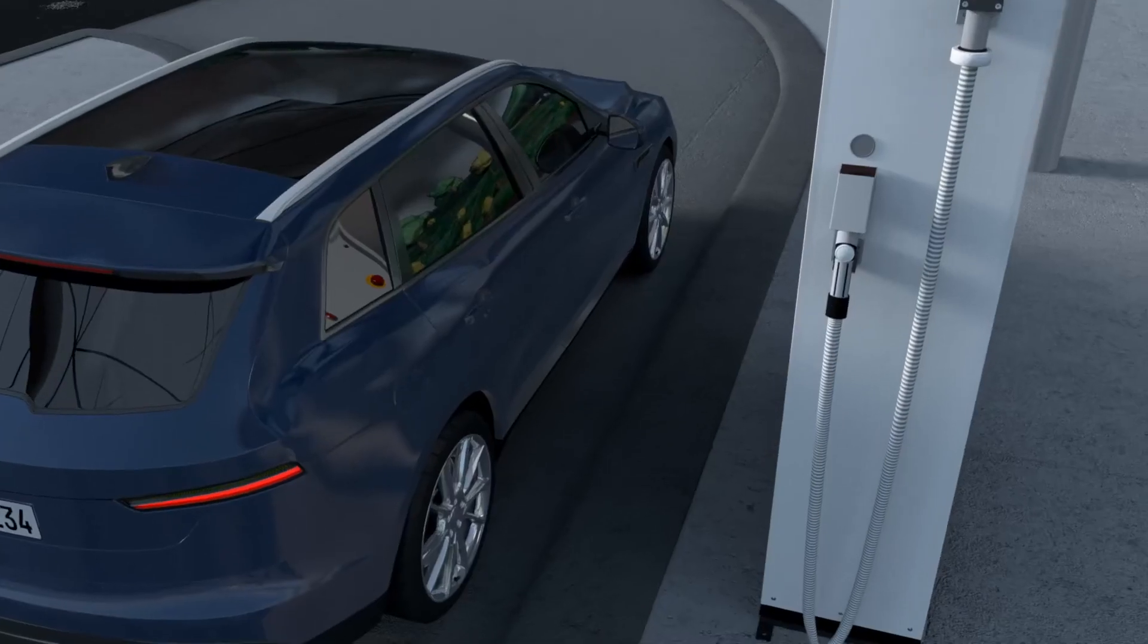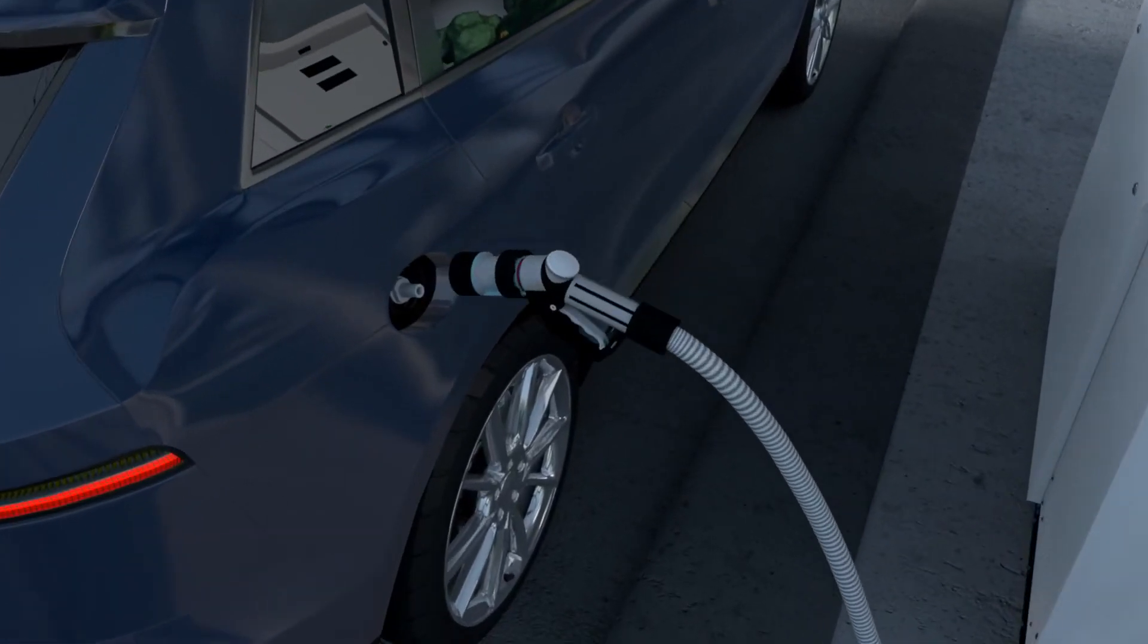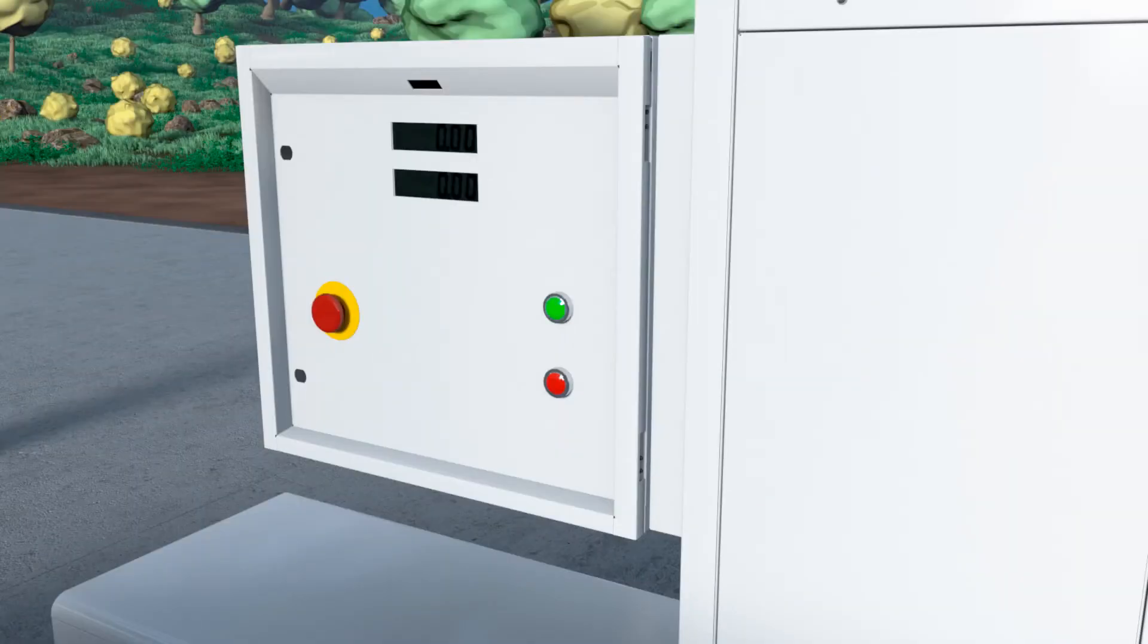The customer attaches the fuel nozzle to the vehicle's fueling inlet and pushes the start button on the hydrogen dispenser. After docking the fuel nozzle and beginning the fueling process, the system initiates an automatic leak test.